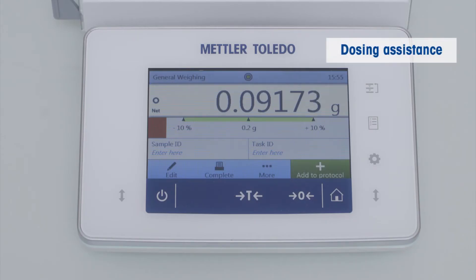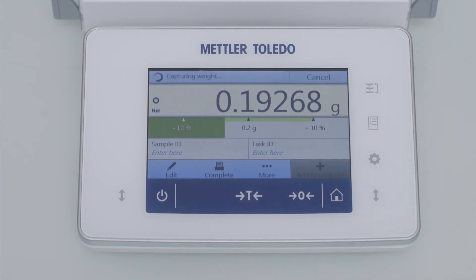The dosing guide helps you to ensure the exact amount within a defined tolerance indicated by the green bar on the display. After dosing in the desired amount we simply push the add to protocol button to transfer the results to the result notepad on the right side of the display.